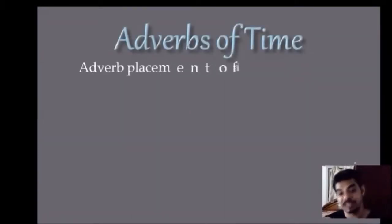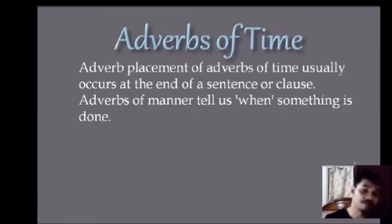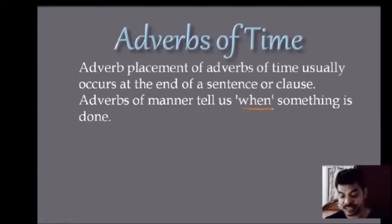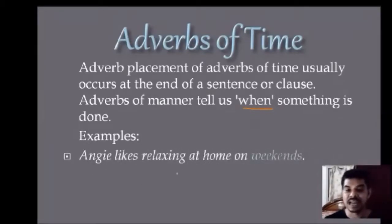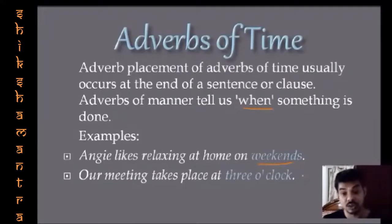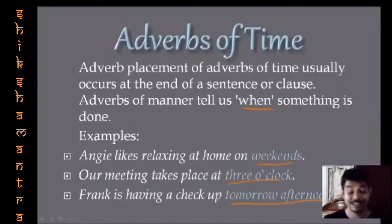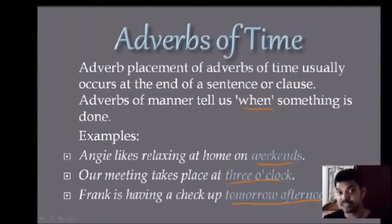There is also the last type: adverbs of time. Placement of adverbs of time usually occurs at the end of a sentence or clause; they tell us when something is done. Examples: 'Angie likes relaxing at home on weekends' — when? On weekends. 'Our meeting takes place at 3 o'clock.' 'Frank is having a checkup tomorrow afternoon.' Remember: when you have adverbs of manner, adverbs of place, or adverbs of time, you place them at the end of the sentence.